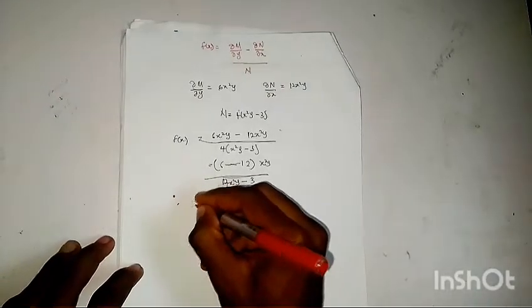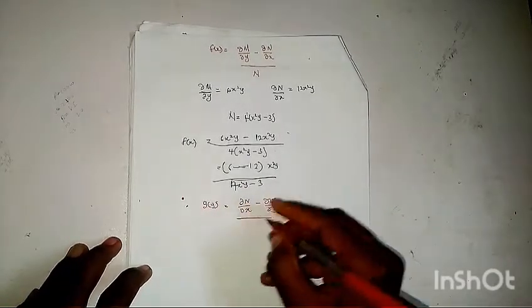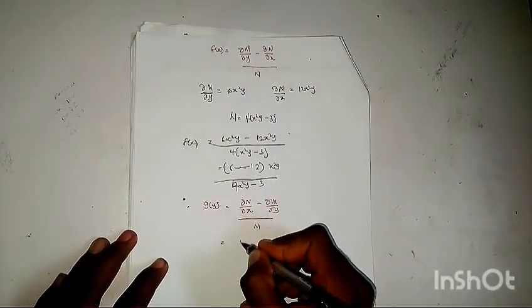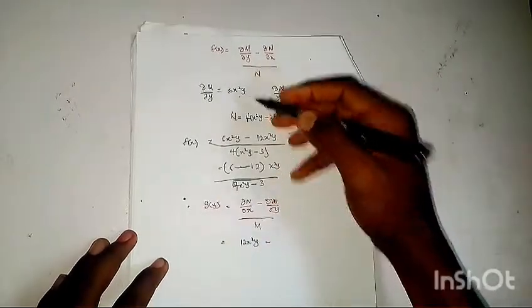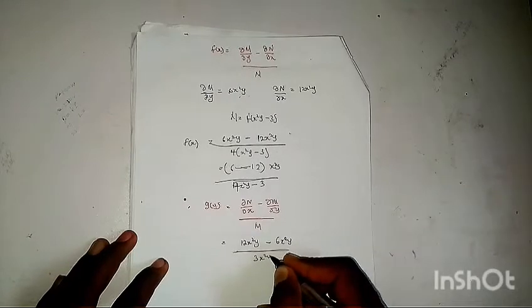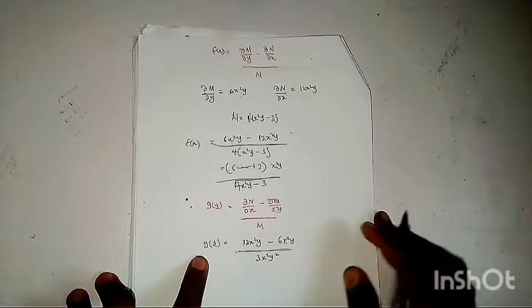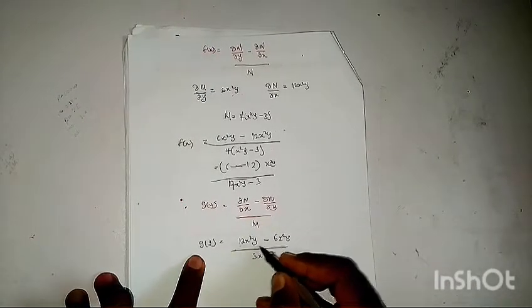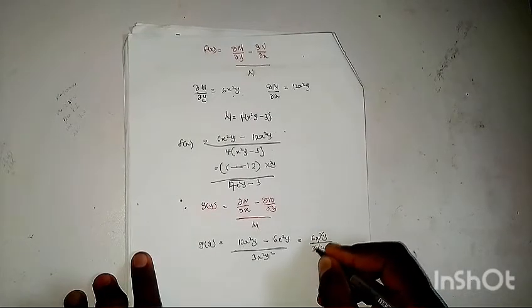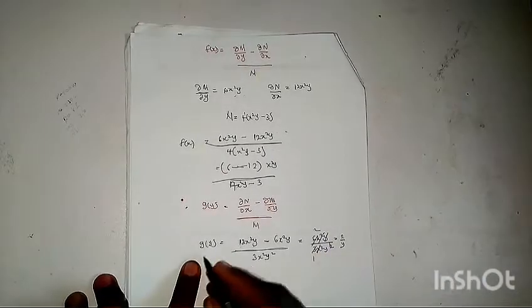Let's test the second equation: g(y) = (∂N/∂x − ∂M/∂y) / M. My ∂N/∂x = 12x²y and ∂M/∂y = 6x²y, and M = 3x²y². So we have (12x²y − 6x²y) / 3x²y² = 6x²y / 3x²y². The x² cancels, 6/3 = 2, and one y cancels, leaving 2/y. This is a function of y only.